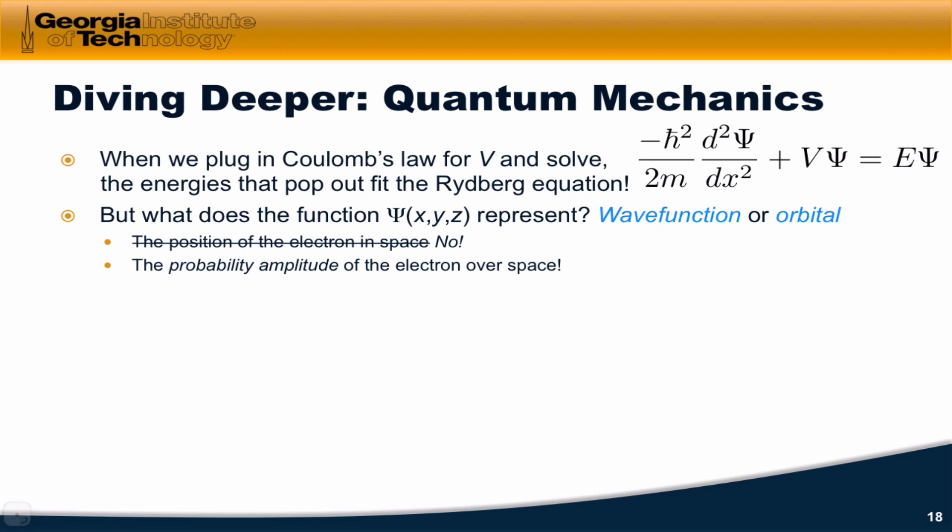The energy of the electron at this point should be fairly clear. We can kind of think of it in a rudimentary way as reflecting Coulomb's law. But what does the function psi, what does this wave function represent?